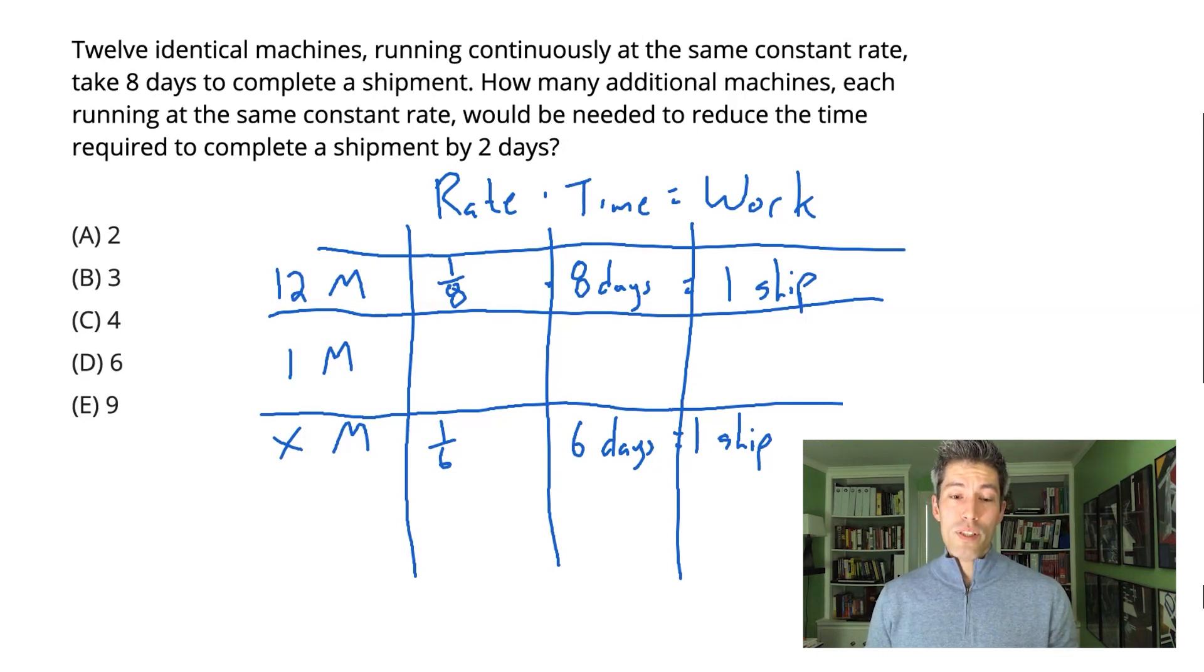Basically, whenever we scale up or scale down the number of machines, we are going to scale up or down the rate of those machines as well. So when we go from 12 machines down to one machine, we are going to cut our rate into a twelfth of its original rate. The rate of 12 machines was an eighth. One machine works 12 times slower than 12 machines. So an eighth divided by 12 will give us our rate of a single machine. An eighth divided by 12 is the same as an eighth times one twelfth, which is one-ninety-sixth.